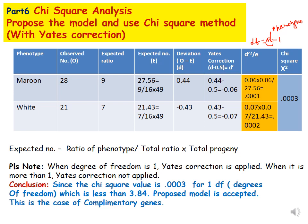Part 6 is chi-square analysis — propose the model and use the chi-square method. We make a table with columns: phenotype, observed number, expected ratio, and expected number. Our two phenotypes are maroon and white. Observed numbers are 28 maroon and 21 white. The expected ratio we already calculated is 9:7, and this is your proposed model.